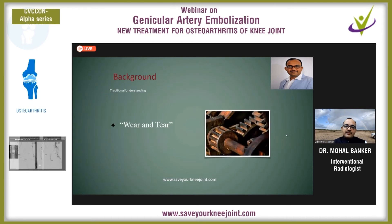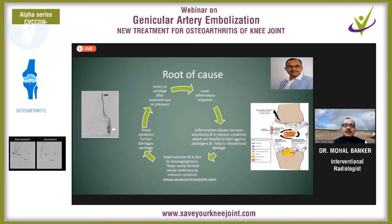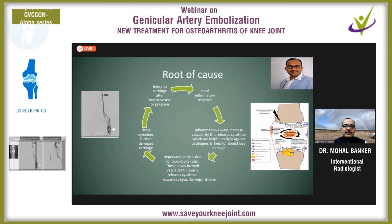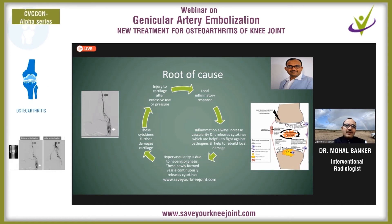So how does genicular artery embolization work? Let's find the root of cause. Traditionally, we think wear and tear is the only culprit for osteoarthritis. But along with wear and tear, there is a chronic inflammatory process going on within the joint. First, cartilage damage occurs, then the inflammatory process starts. The body releases cytokines of two types — one helping to rebuild tissue and another helping to destroy pathogens. In layman's terms, these cytokines are like an army — simultaneously fighting enemies and building infrastructure — and the balance between the two types is very important.